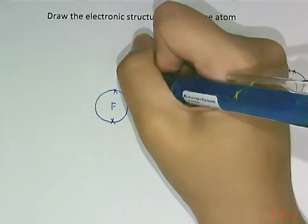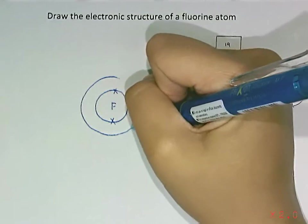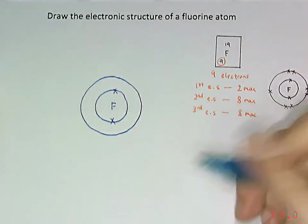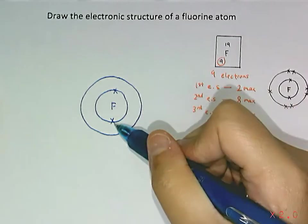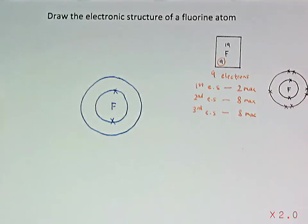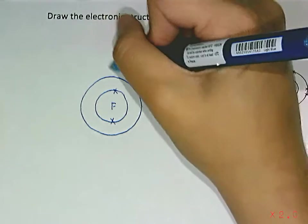And then, I'm going to draw another bigger circle, which is its second electron shell. I'm going to put in 7, because 9 minus 2 equals 7. And we don't need to use all 8 spaces in the second electron shell.